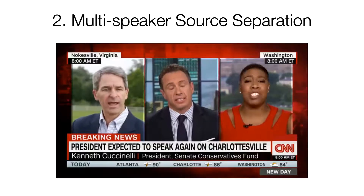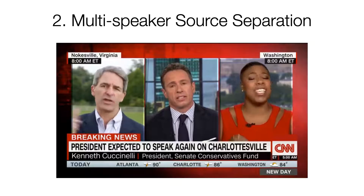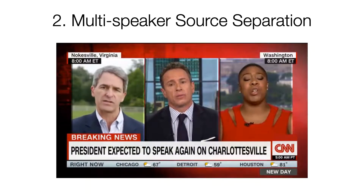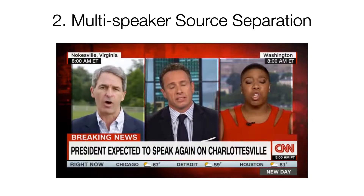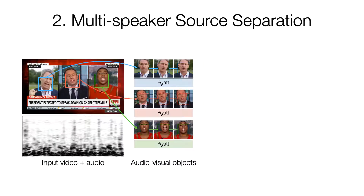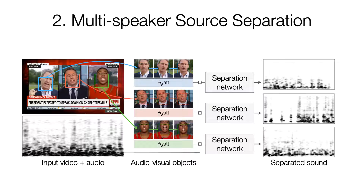The second task that we apply our learned audiovisual objects to is sound source separation. The task is, given a video with multiple speakers, to detect the speakers and separate their voices. Unlike previous works, our method can do all this in a single pass without requiring object detectors. It just provides a source separation network with the visual descriptors for every audiovisual object.